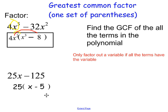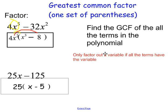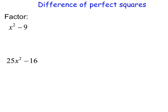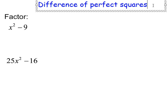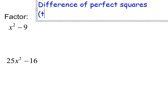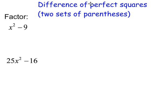So that's my final answer. Important: when you do GCF factoring, it's just one set of parentheses. Now on to difference of perfect squares — difference of perfect squares requires two sets of parentheses.